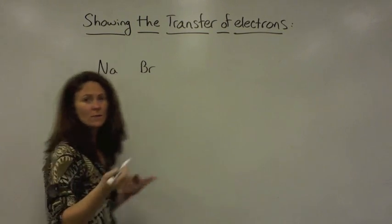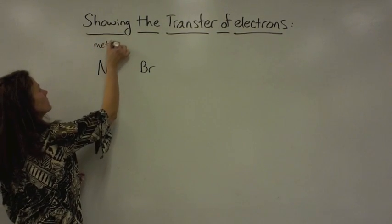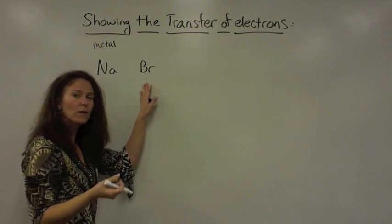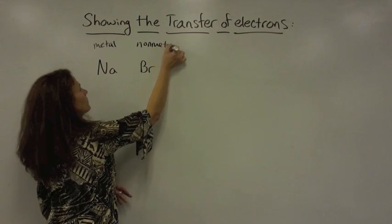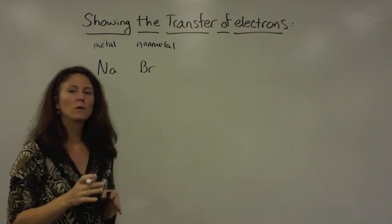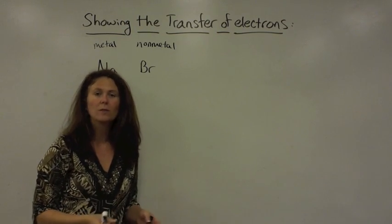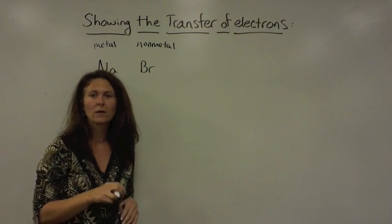Sodium is the metal, and bromine is the non-metal. The first thing you would like to do is get a periodic chart and make sure you look at the group number that these elements are in.